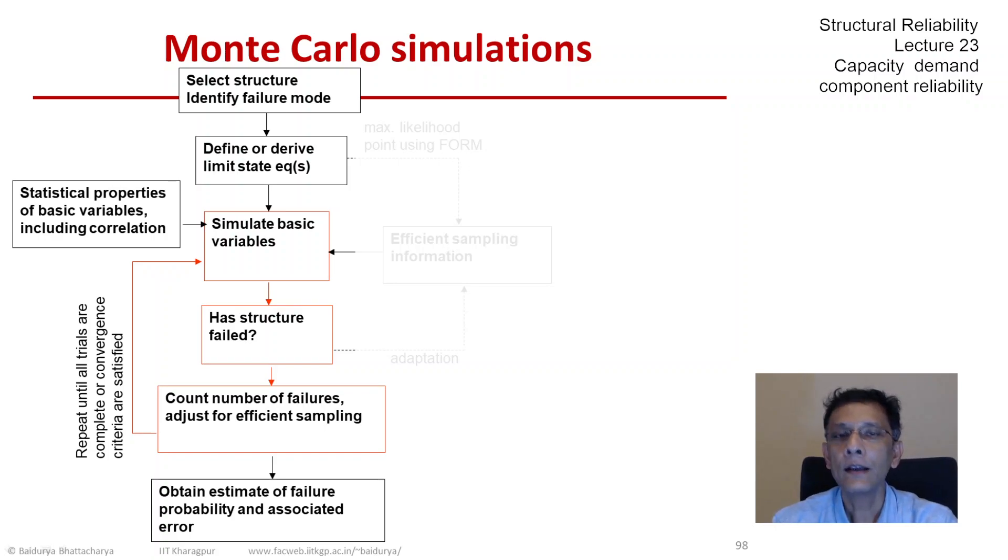So here is the algorithm in broad terms. We select the structure, identify the failure mode—that's the top box that you see in this flow chart—and then we define the limit states.